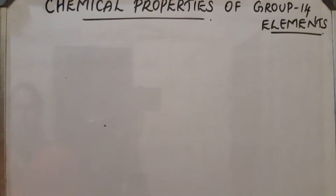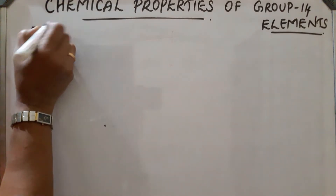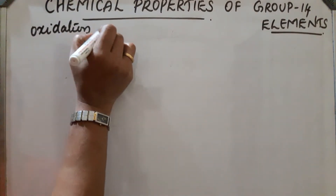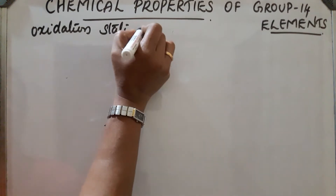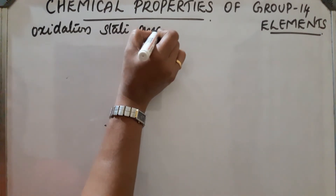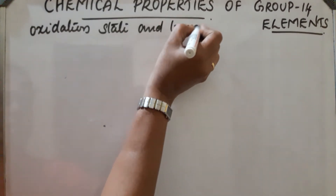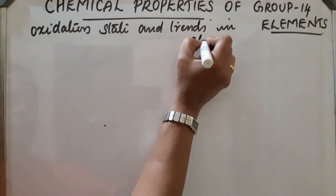Chemical properties of Group 14 elements. First, oxidation state and trends in chemical reactivity.